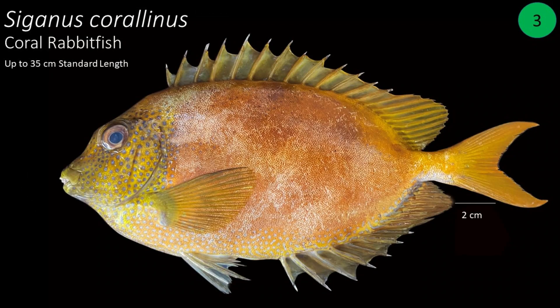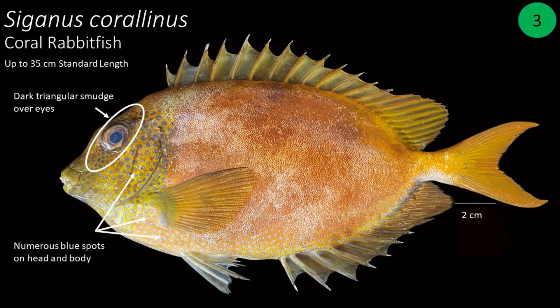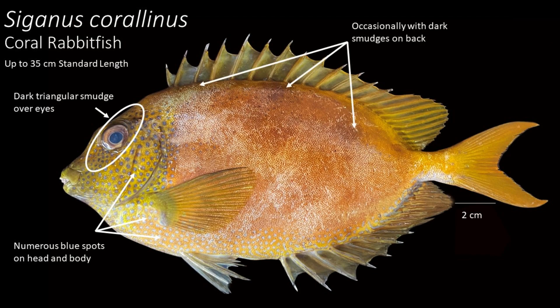Number 3: Siganus corallinus, commonly called coral rabbitfish. This fish can grow up to 35 centimeters in standard length. The body is yellow, there is a dark triangular smudge over the eyes, and you can find numerous blue spots on the head and body, occasionally with dark smudges on the back.